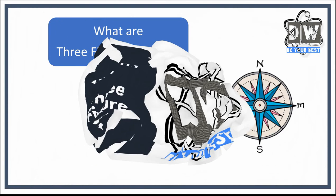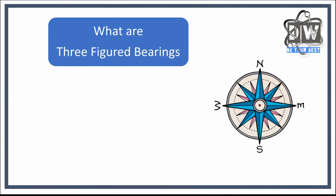So very simply, what are three-figured bearings? We're thinking of a compass, which we can see on the right here, and we're thinking about the direction that we go in and how we would describe that direction so that people don't go in the wrong direction.